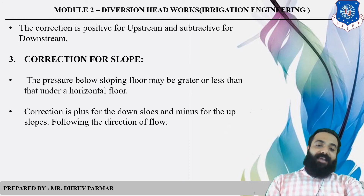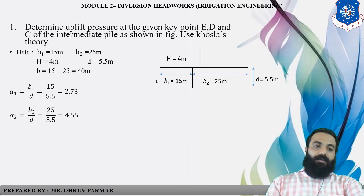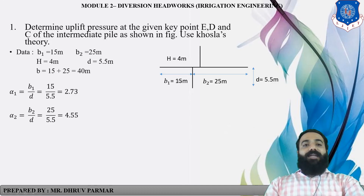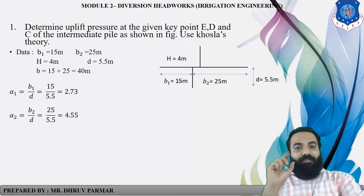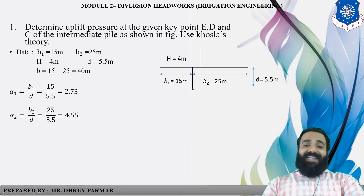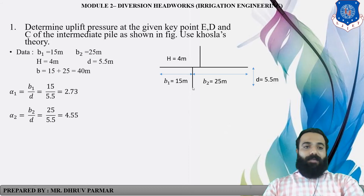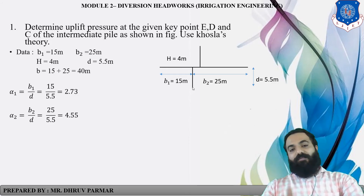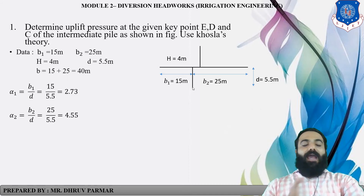Let's start the example. Determine uplift pressure at given points E, D, and C for the intermediate pile as shown in the figure. This is the first case for an intermediate pile using Khusla's theory. We calculate B1, B2, and B, which equals 40 meters. The head is given as 4 meters and D equals 5. First, calculate alpha_1 equals B1 by D and alpha_2 equals B2 by D.